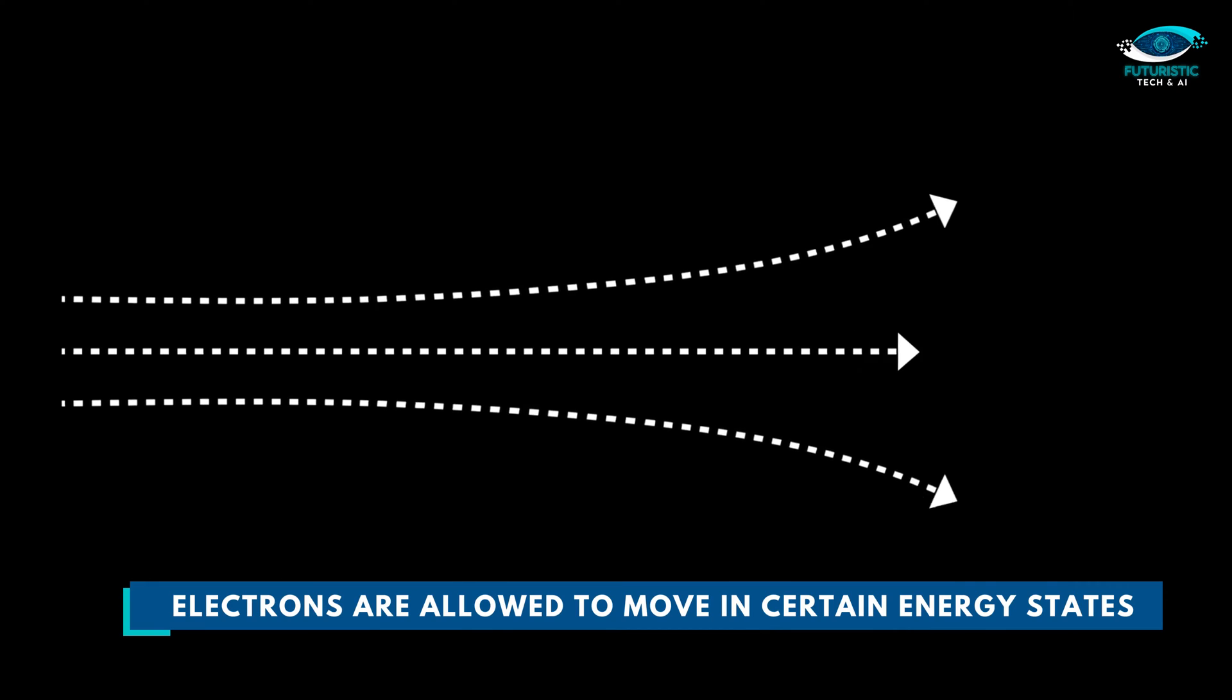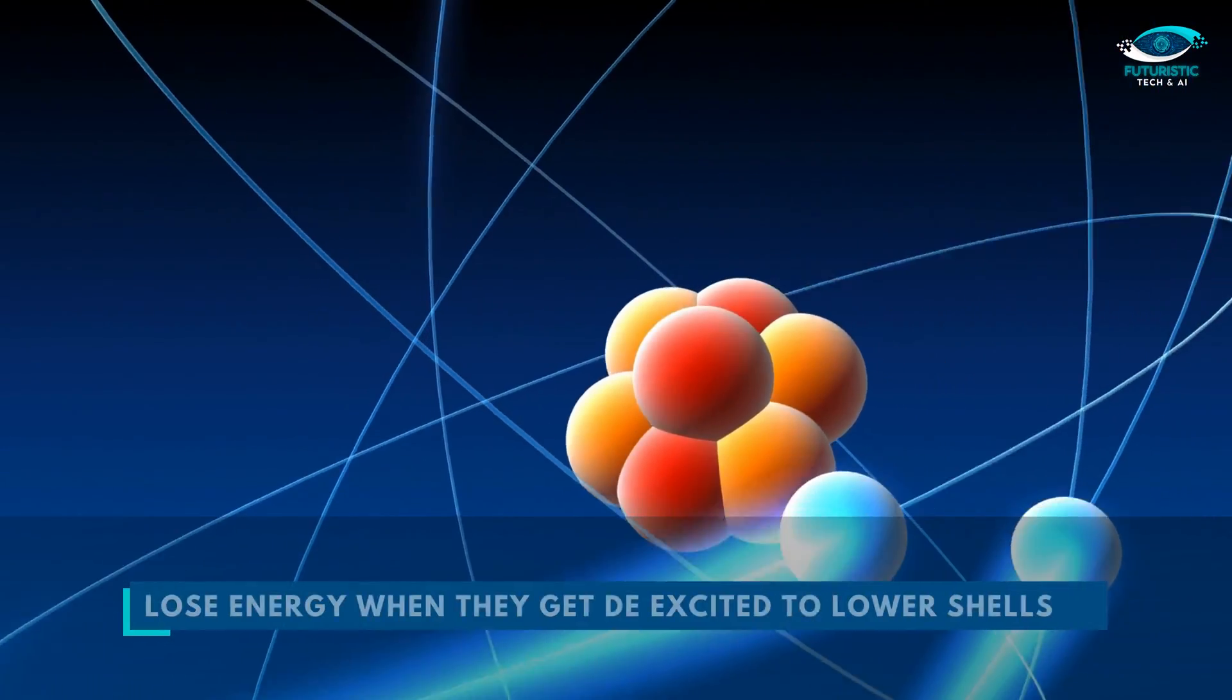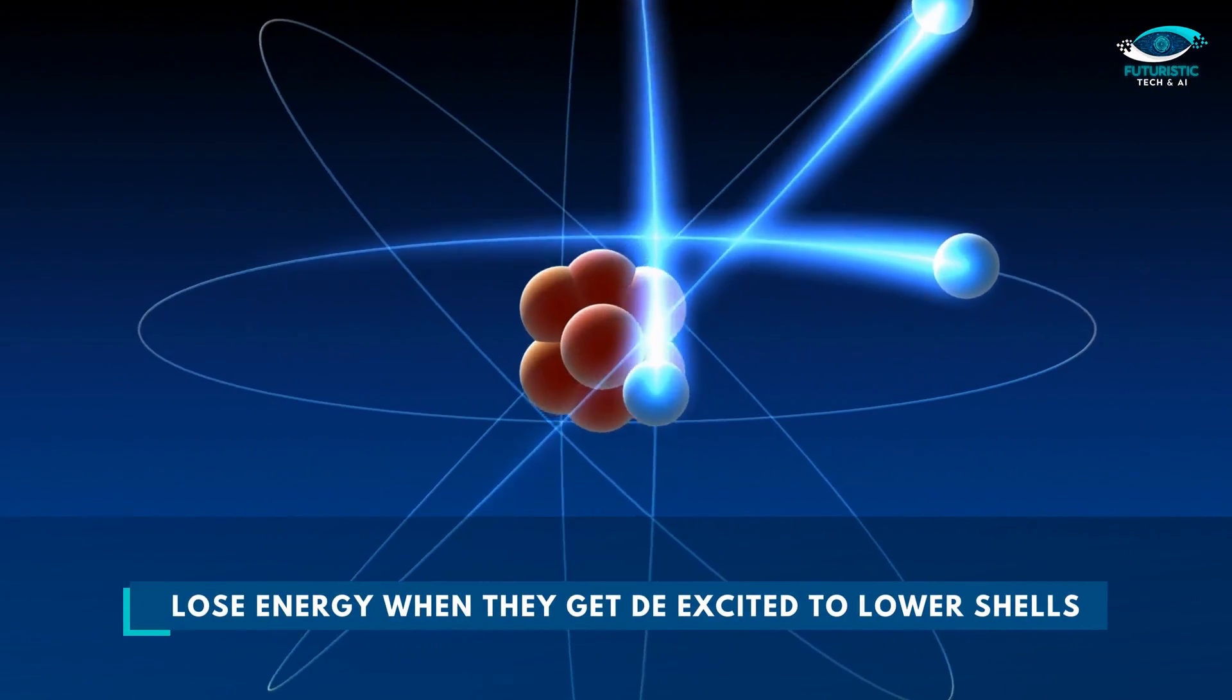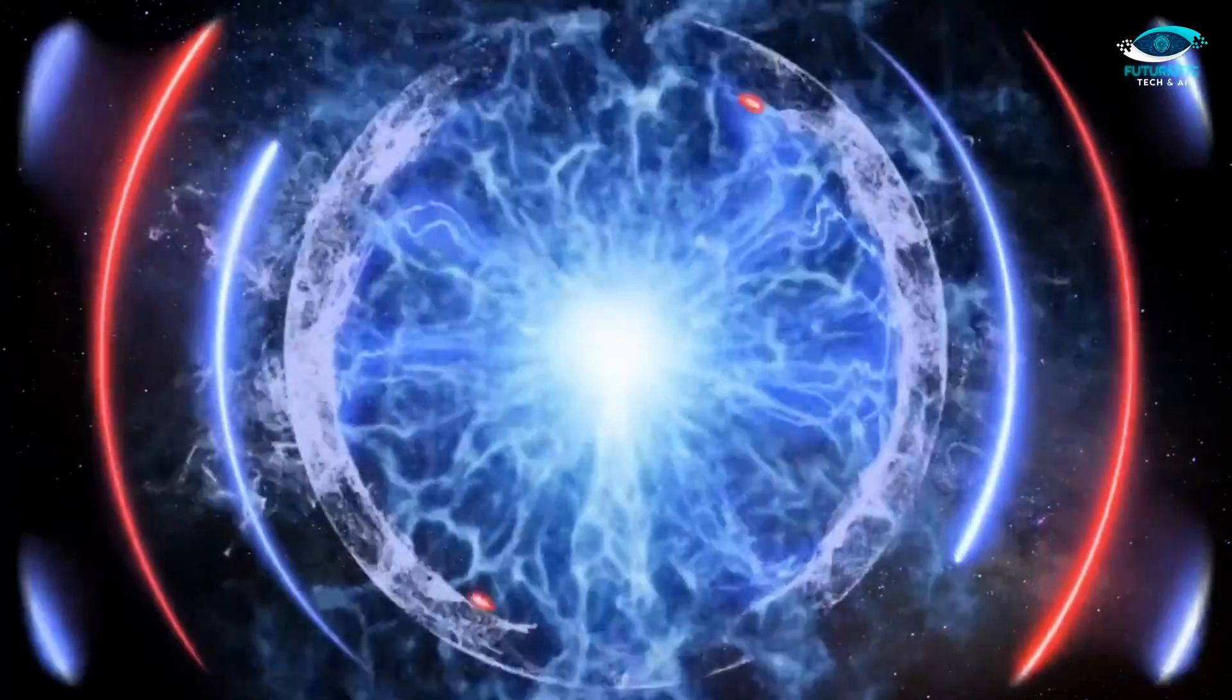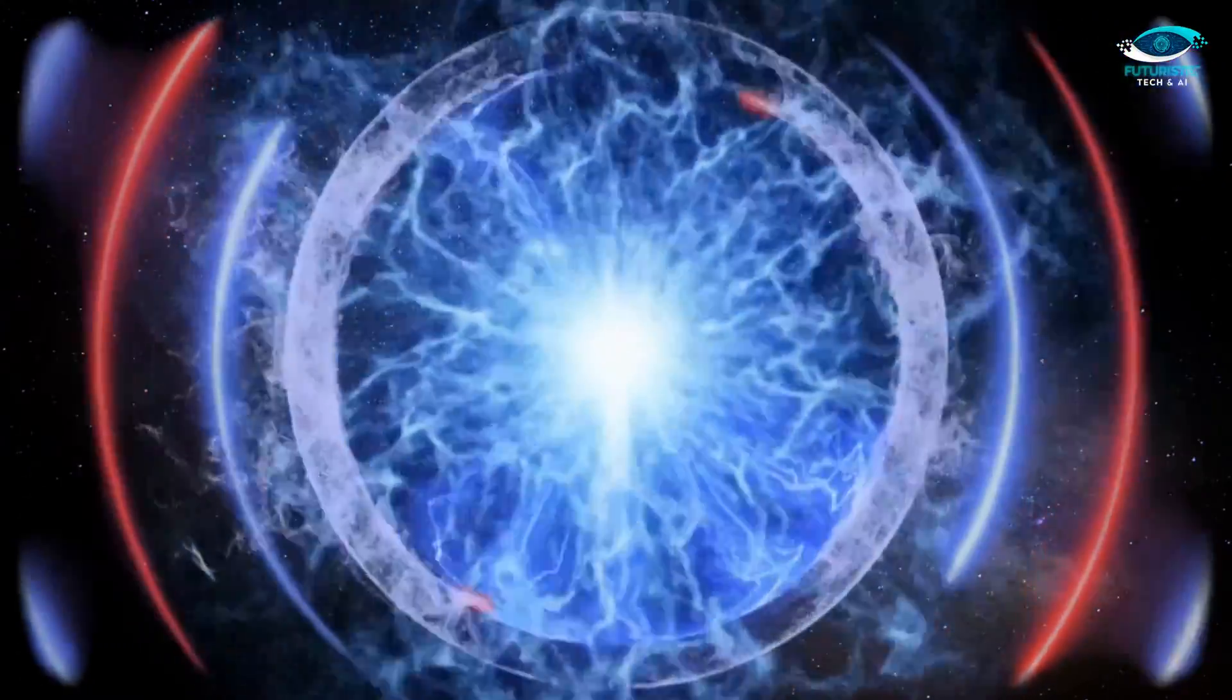Bohr explained that electrons are allowed to move in certain energy states. If electrons are in higher orbital shells, they lose energy when they get excited to lower orbital shells. Conservation of energy demonstrates that energy should go somewhere, so photons carry this energy.